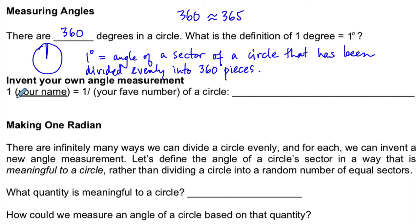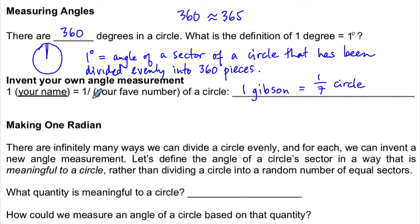You can take your favorite number and invent an angle called one of your names. For example, I could say 1 Gibson equals 1 seventh of a circle, and from now on measure angles using the Gibson. You could do the same with your name and your favorite number. The point is that there are infinitely many ways to do that, so for each of those ways, we can invent a new angle measurement — none of them is really more meaningful than another.